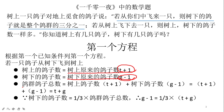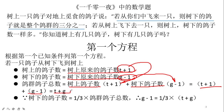鸽子总数等于树上的鸽子数量再加上地面上的鸽子数量。树上的鸽子数量是T+1，地面上的鸽子数量是G-1，所以鸽子总数就等于(T+1)+(G-1)，化简出来就是T+G。实际上，鸽子从地面飞到树上，鸽群总数是没有变化的，只不过地上少了一只，树上增加了一只，总数还是T+G。